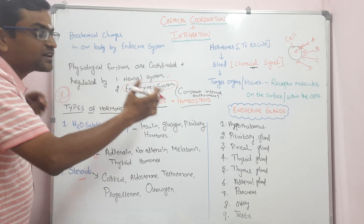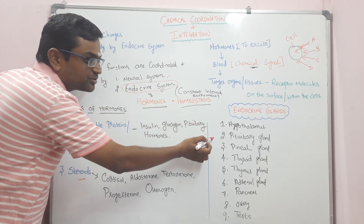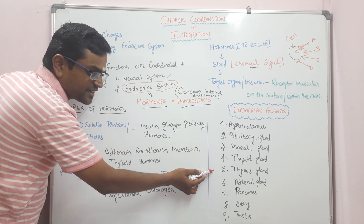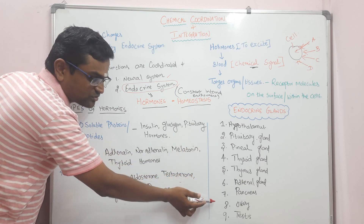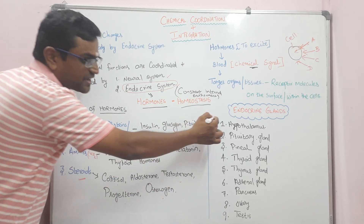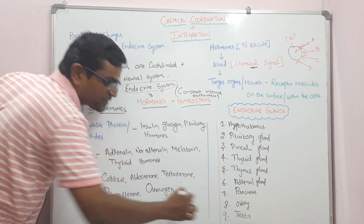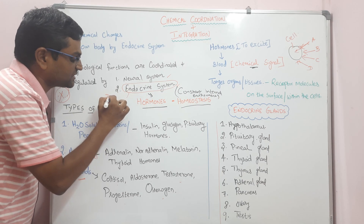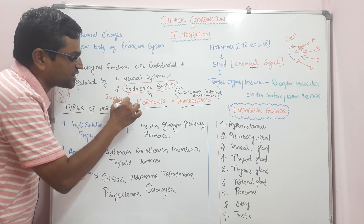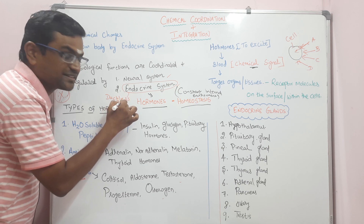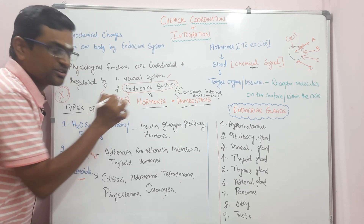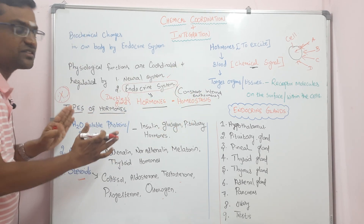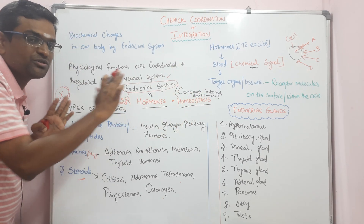Now, the endocrine glands. The endocrine glands include: hypothalamus, pituitary gland, pineal gland or pineal body, thyroid gland, thymus, adrenal gland, pancreas, ovary, and testes. So there are nine types of endocrine glands present in our body.